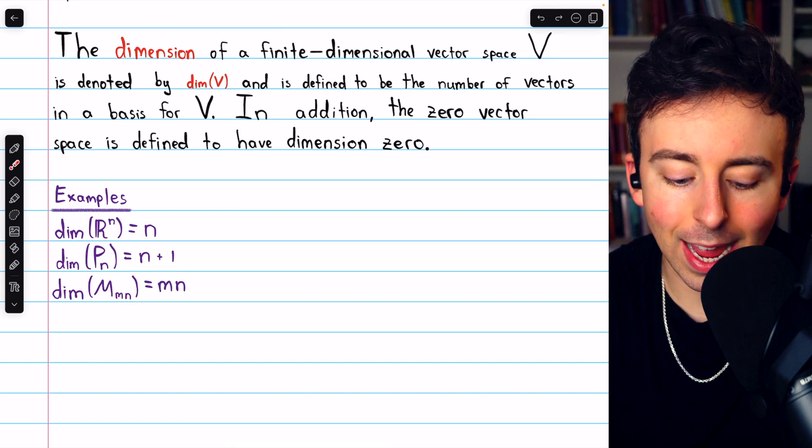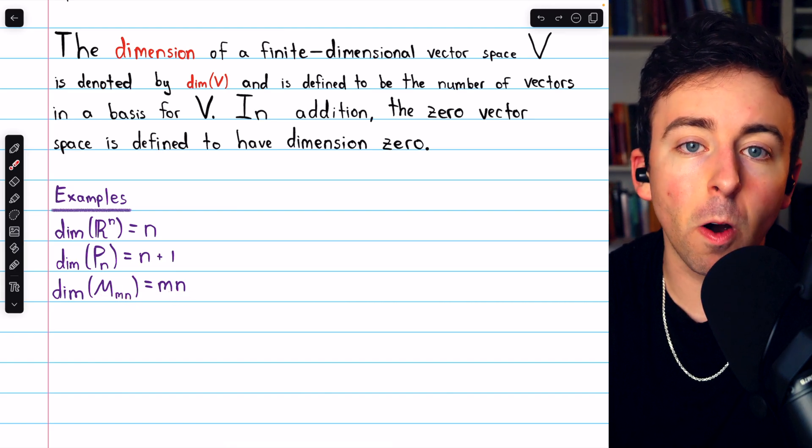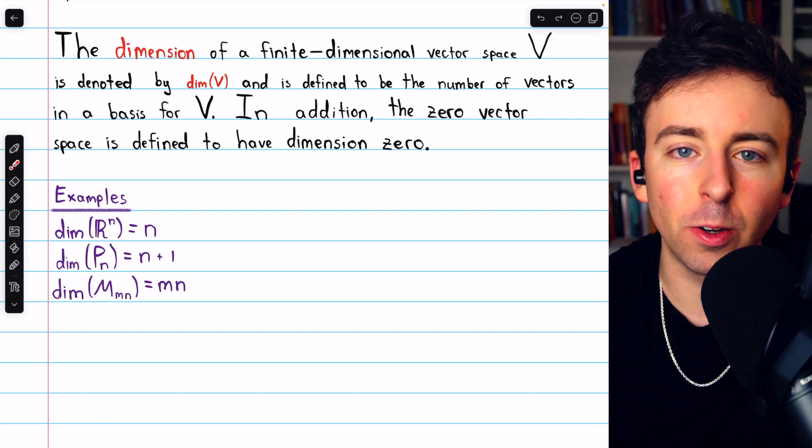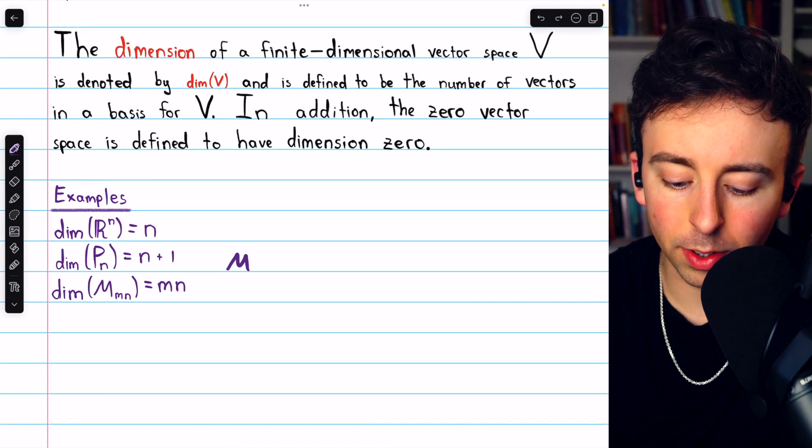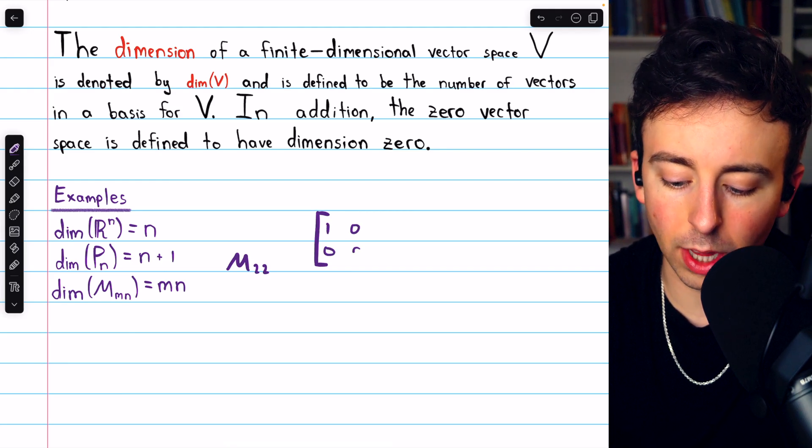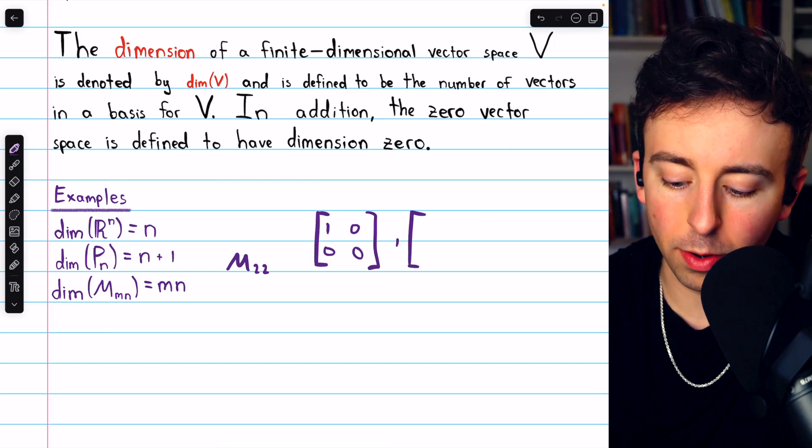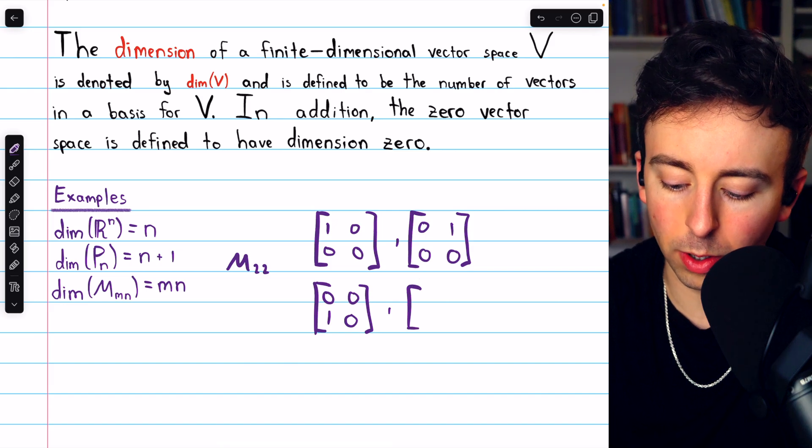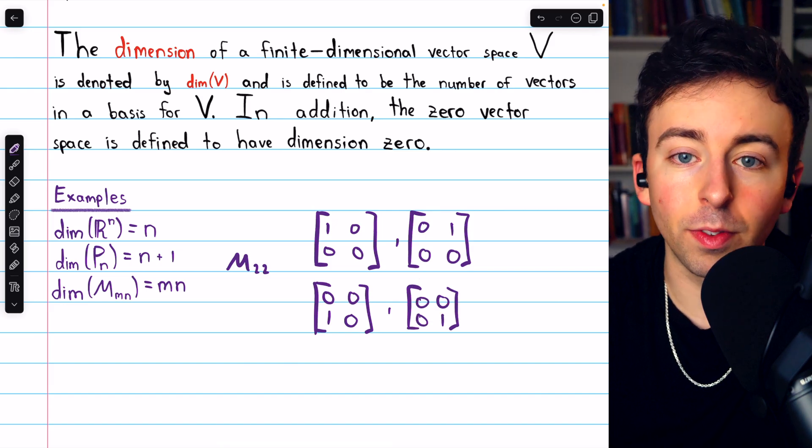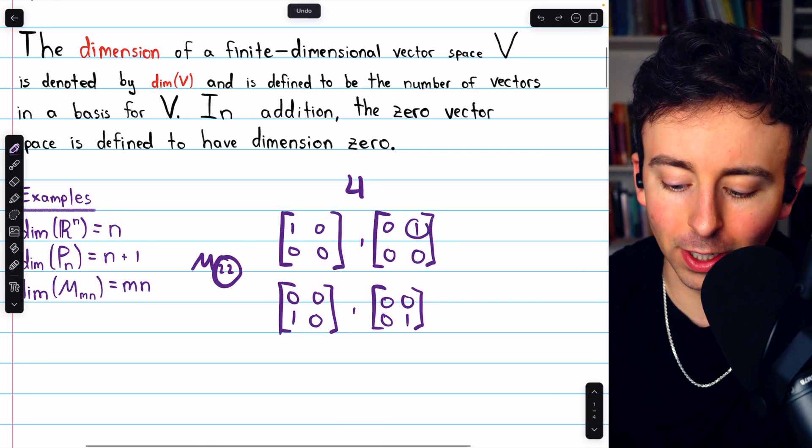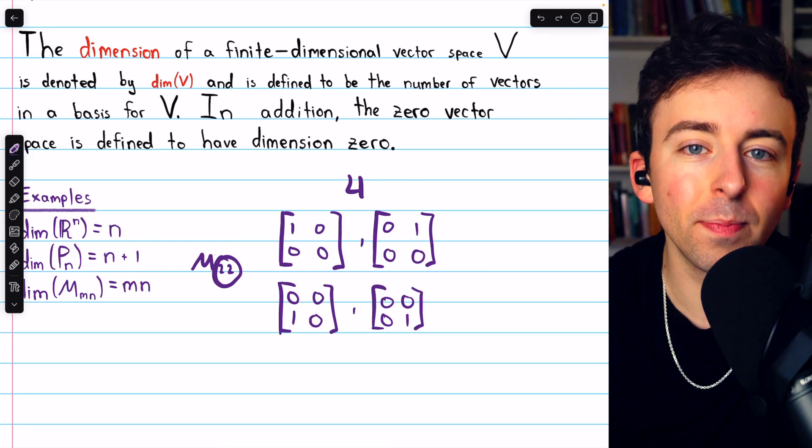The dimension of the vector space of m by n matrices is m times n, because there are m times n entries in an m by n matrix, and we need a matrix for every one of those entries, where the entry is 1 and the others are 0. For example, the standard basis vectors for the vector space of 2 by 2 matrices has this vector, which is a matrix with a 1 in the top left. It has this vector, where the matrix has a 1 in the top right. It has this vector, where the matrix has a 1 in the lower left. And it has this vector, where the matrix has a 1 in the lower right. The dimension of this vector space is 2 times 2, that's 4. Because there are 4 entries, which all need a turn at being 1. They all need their own matrix, where they are 1 and everything else is 0.